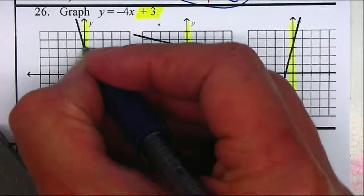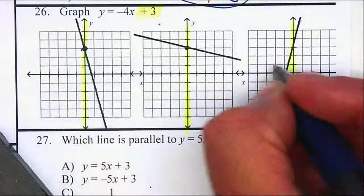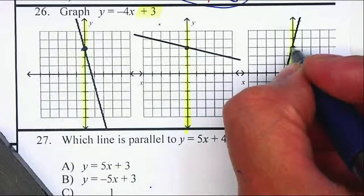1, 2, 3. So that one's fine. 1, 2, 3. That one's fine. And 1, 2, 3. So they're all fine.